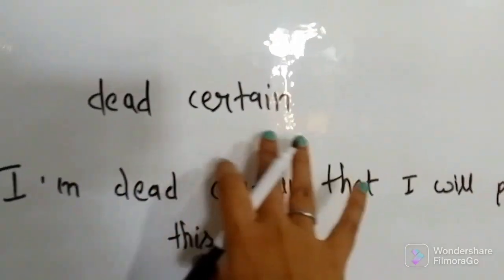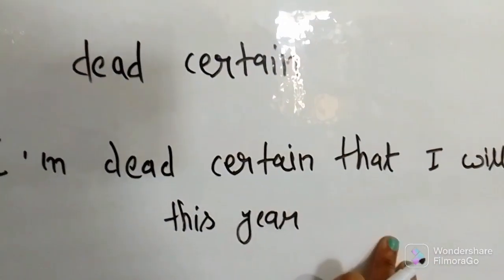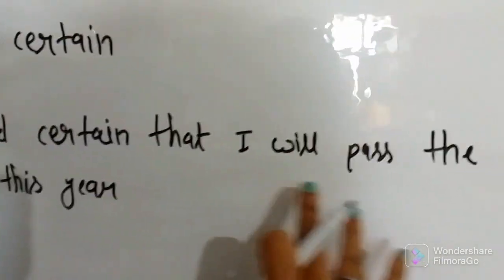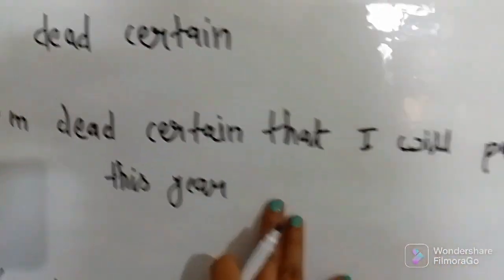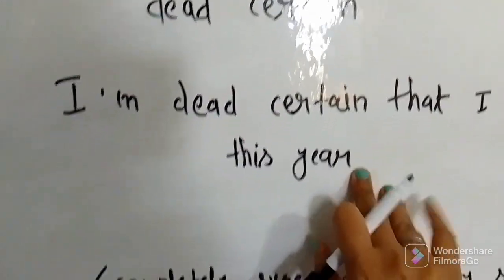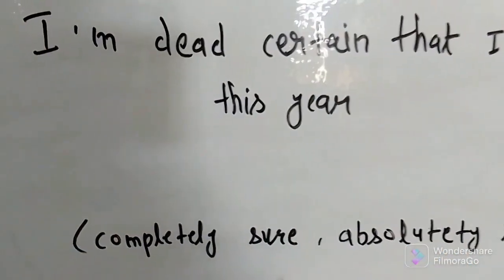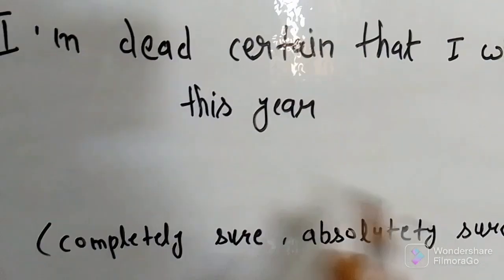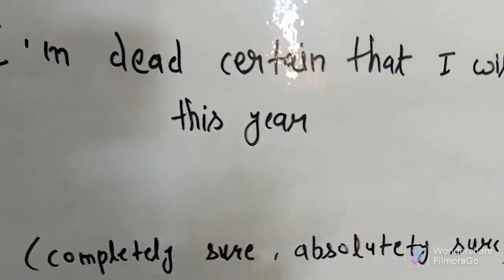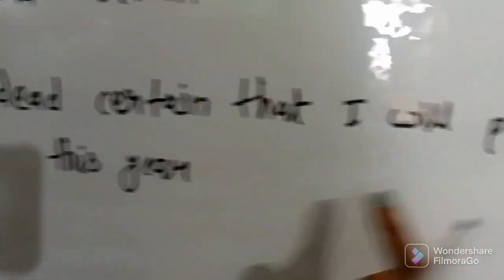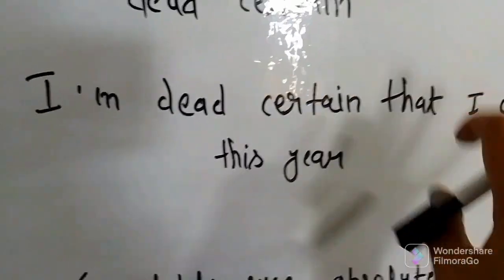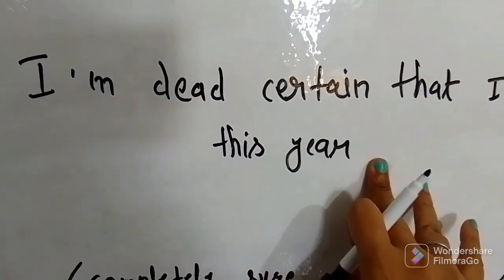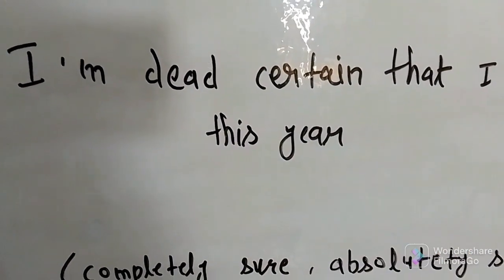Next is 'dead certain.' Look at the example: 'I'm dead certain that I will pass the exams this year.' That means I'm completely sure and absolutely sure — I'm dead certain — that I will pass the exams this year. That is the meaning of dead certain.